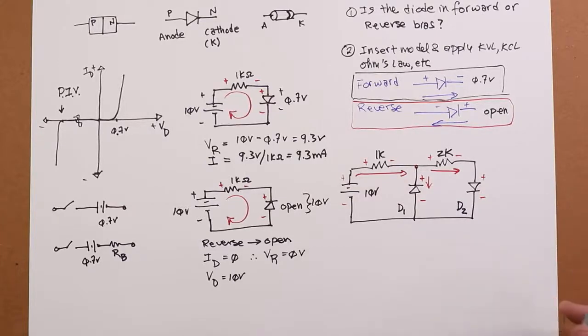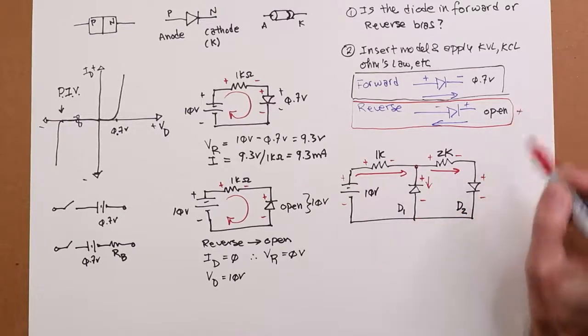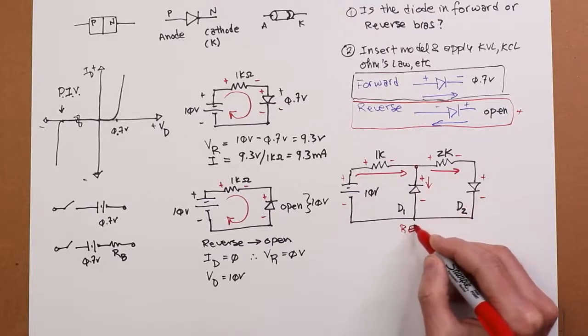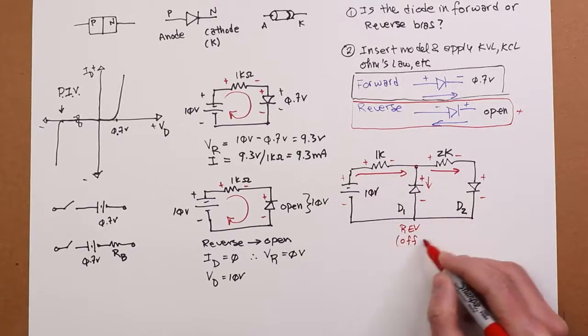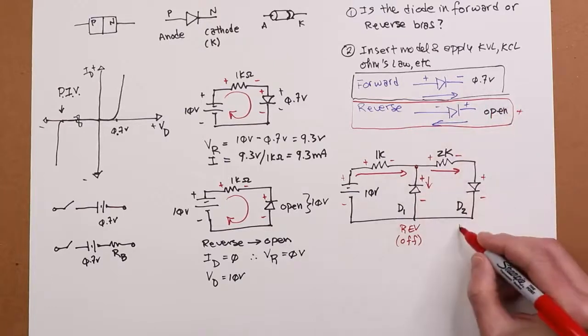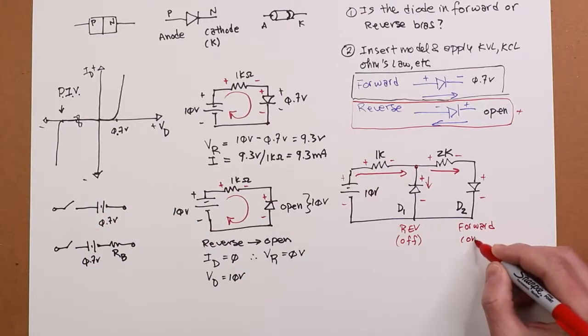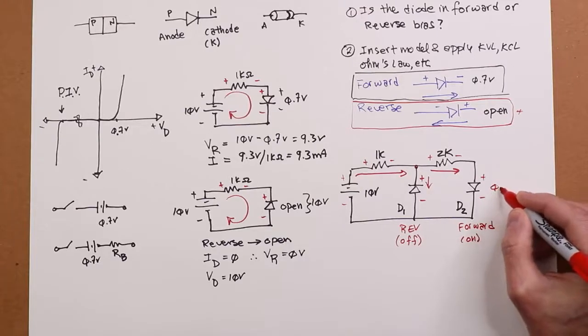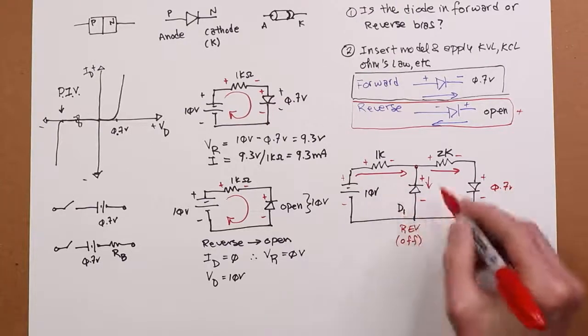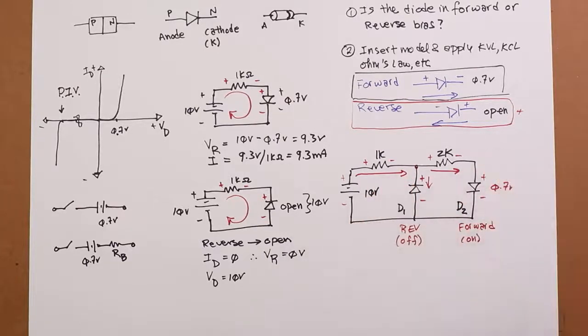So what do we have? Well, D1 plus to minus, which is cathode anode, that's this case. So this thing is off. This is the reverse case. This one plus to minus anode to cathode, that's the forward case. So this is the on of 0.7. So we think of this as just being 0.7 volts. Well, if this is off, if this is open, you could simply think of this as a source, two resistors, and this 0.7 volts. Just pretend this isn't even here.